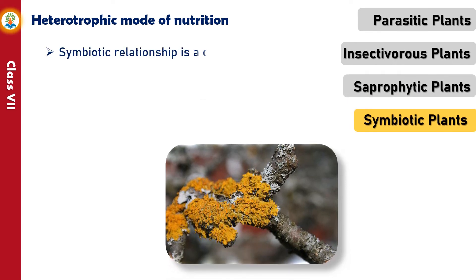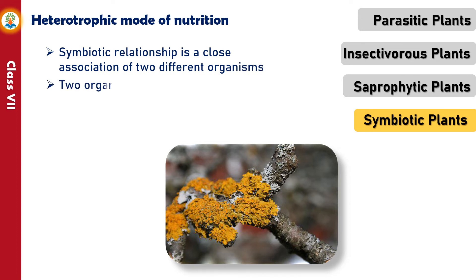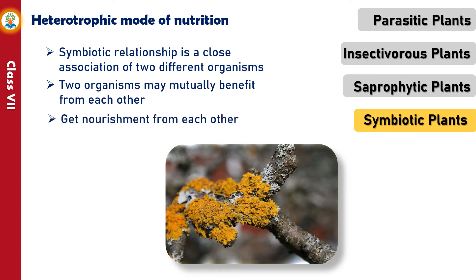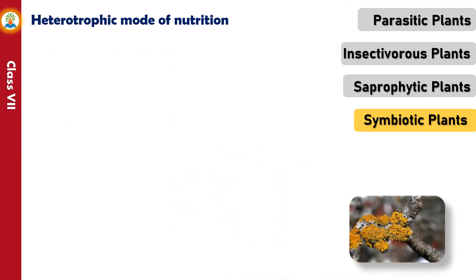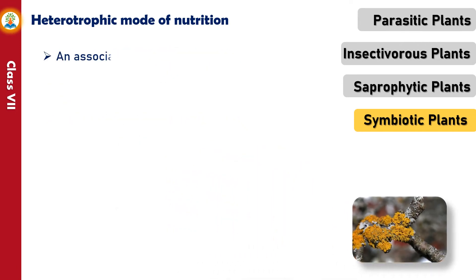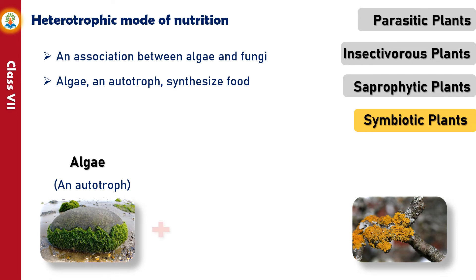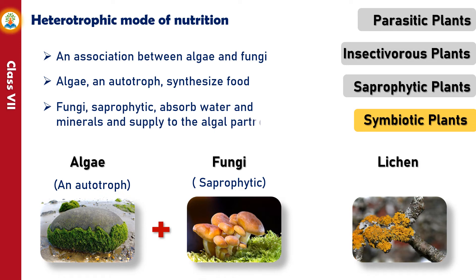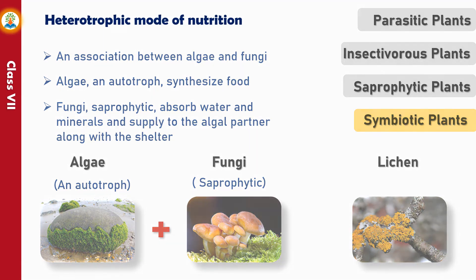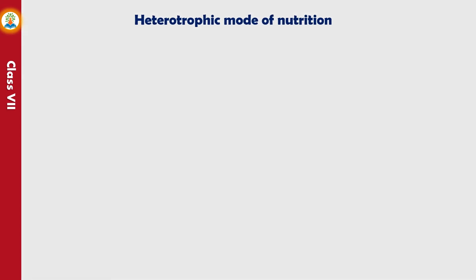A symbiotic relationship is a close association of two different organisms in which both may mutually benefit and get nourishment from each other. An example of such a relationship is lichen, which is an association between algae and fungi. Algae, being autotrophs, synthesize food, while fungi, being saprophytic, absorb water and minerals and supply them to the algal partner along with shelter.